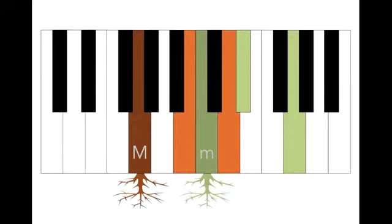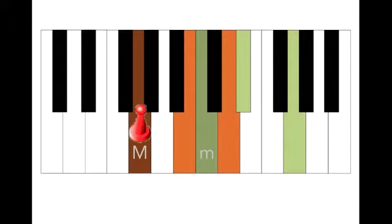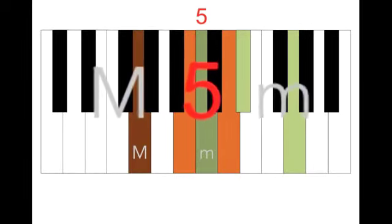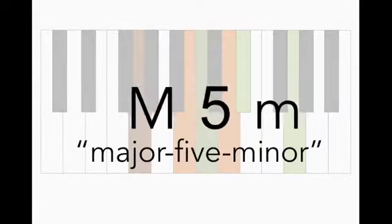Now these both have a root. The root of the major triad here is a G and the root of the minor triad is a C. All we have to do is count between the root of the major and then the root of the minor and we get a five note gap. So we call that a major V minor.